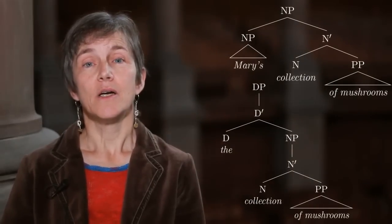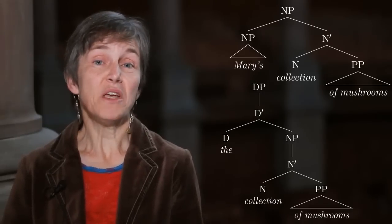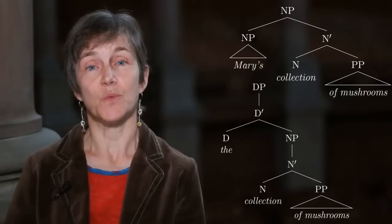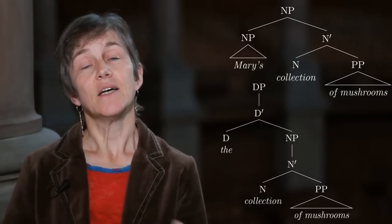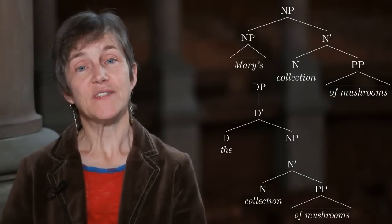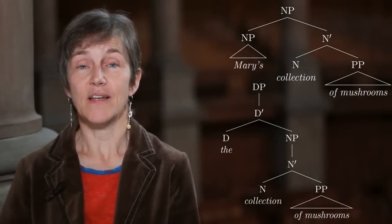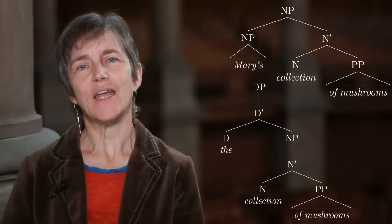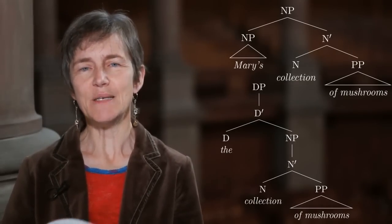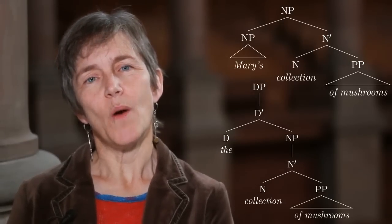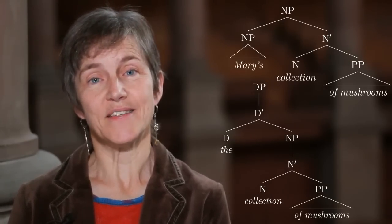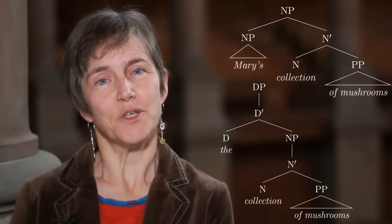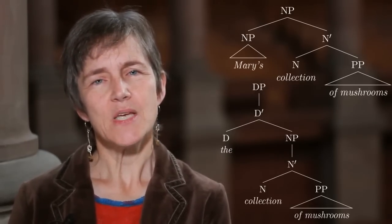At this point we should go back and consider how we're going to analyze cases where instead of just a determiner, we have a possessor. We might think that the possessive phrase is in the specifier of the NP. But that would mean that where we have the possessor we have an NP, whereas when we have the determiner we have a DP — so Mary's collection of mushrooms with a possessor would be an NP, and the collection of mushrooms with a determiner would be a DP. That would give them different categories.